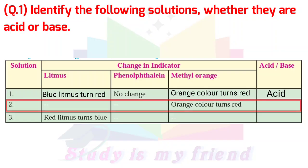Solution 2 - Blue litmus turns red, phenolphthalein shows no change, methyl orange turns red. This is an acid.